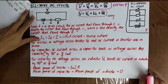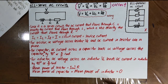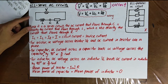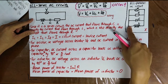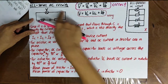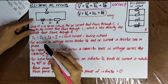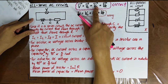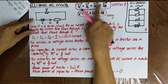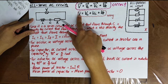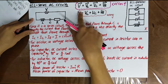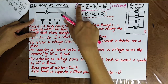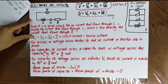Now moving to the RCL series circuit, combining all components in series. By the same reasoning, V = VL + VC + VR without vectors is guaranteed wrong because they are all not in phase. The correct form uses vector addition: V arrow = VL arrow + VC arrow + VR arrow.